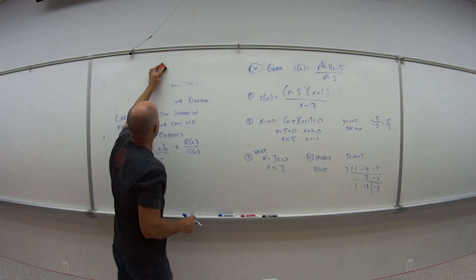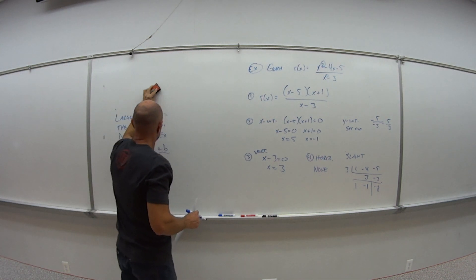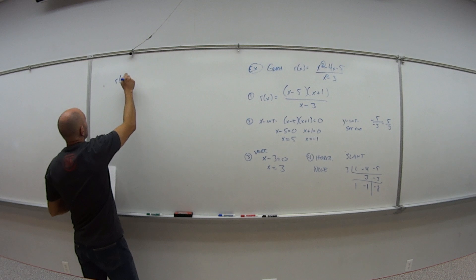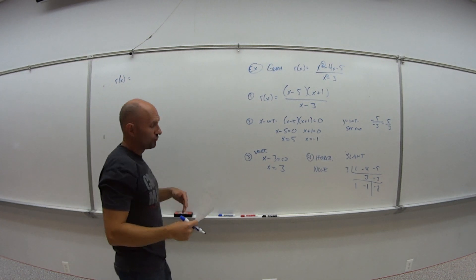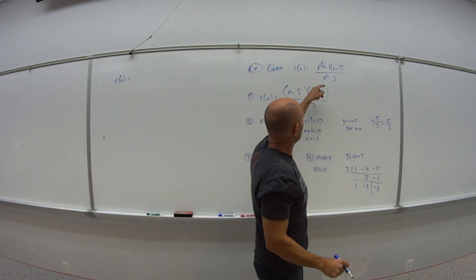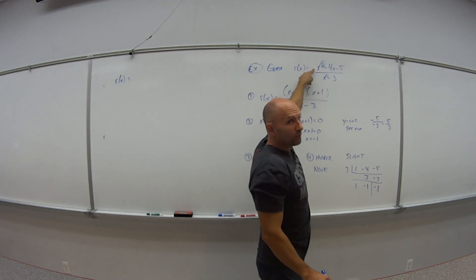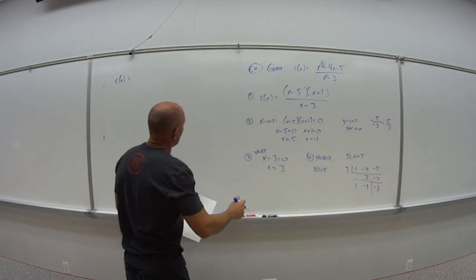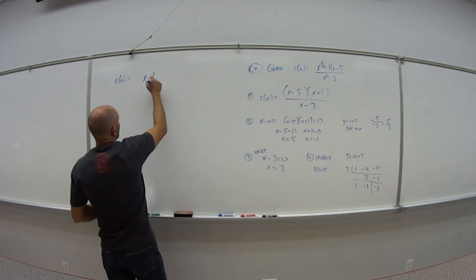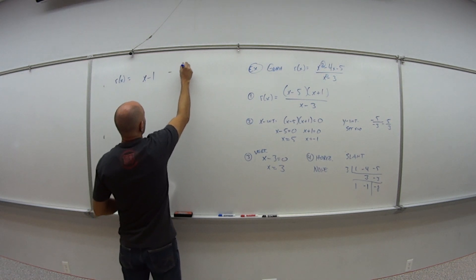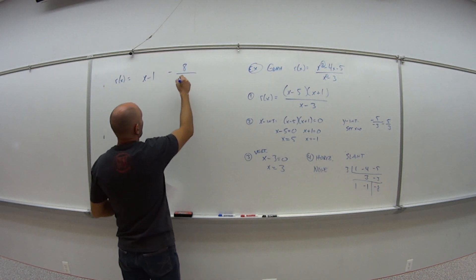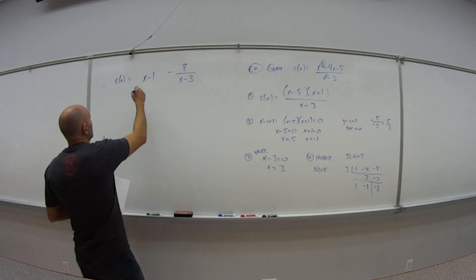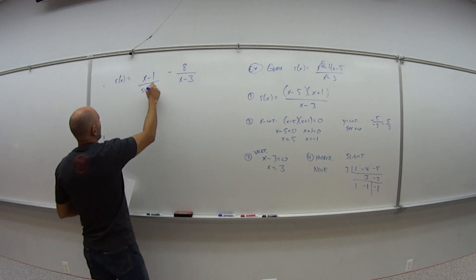So I can rewrite my r of x, the original rational function, as, well, just remember what happened when we were doing synthetic division. Whatever the numerator started as, it goes down by 1. So that's just x to the first power. So this is really x minus 1, and then my remainder minus 8 over x minus 3. And so this guy here is the slant asymptote.